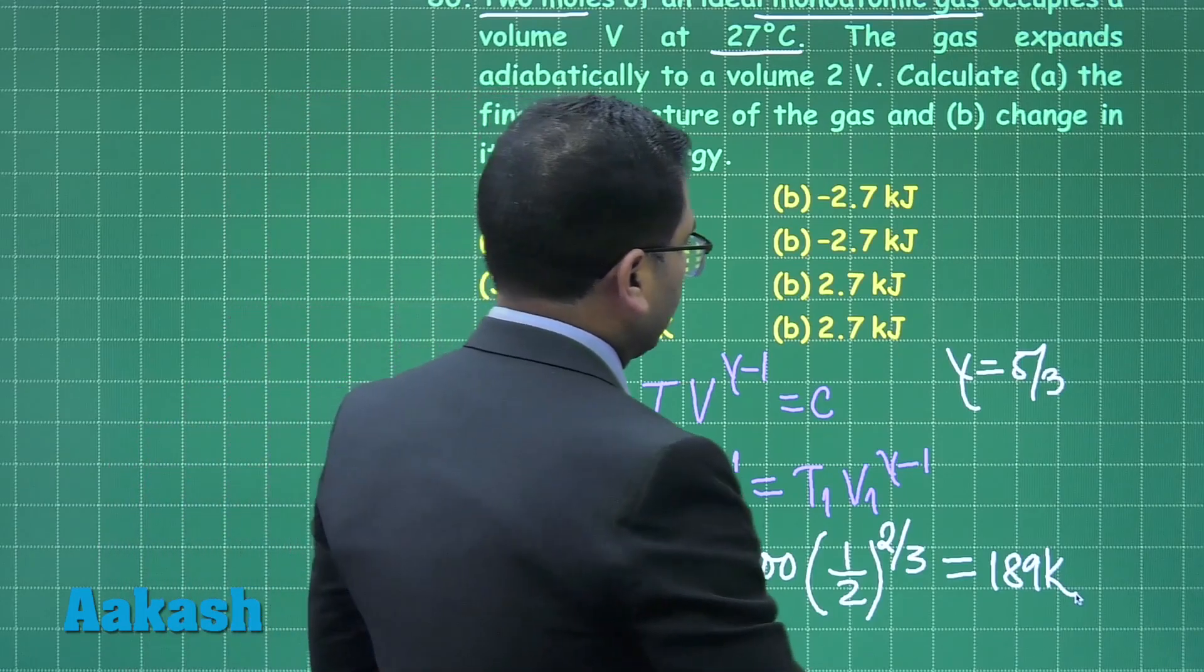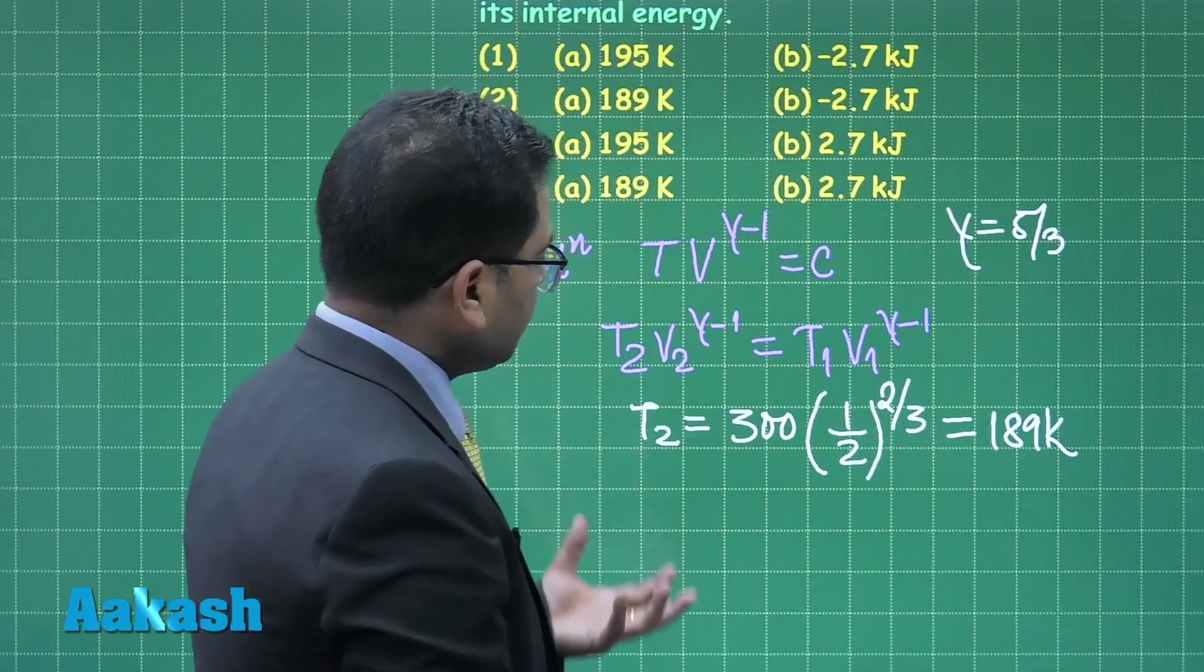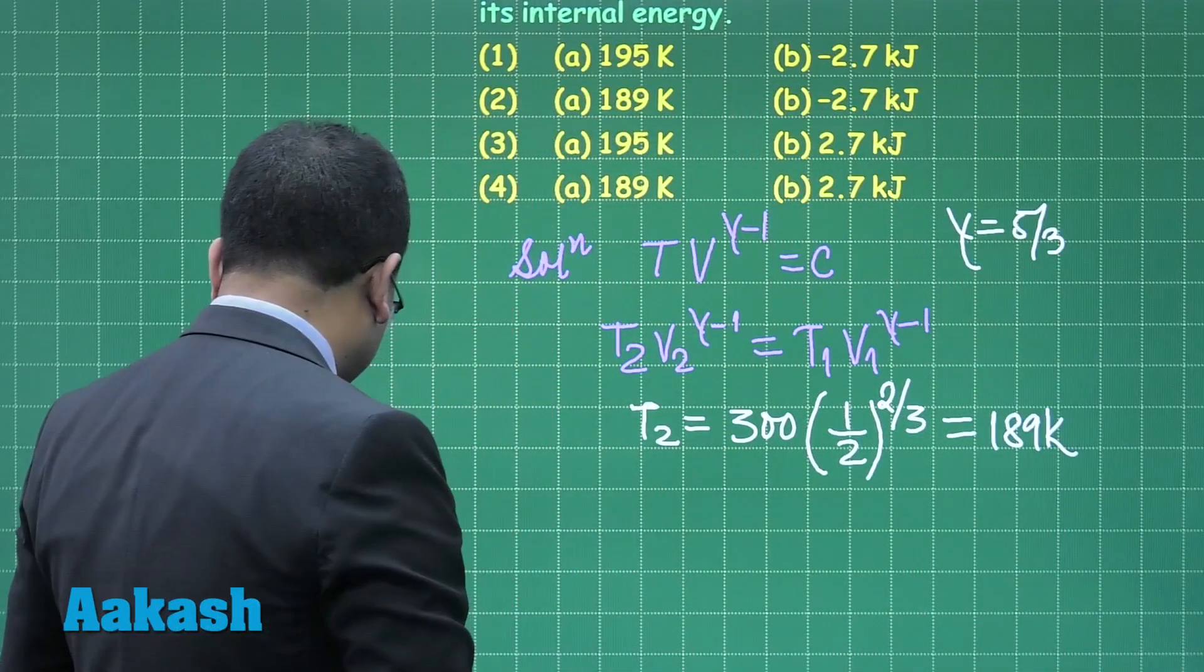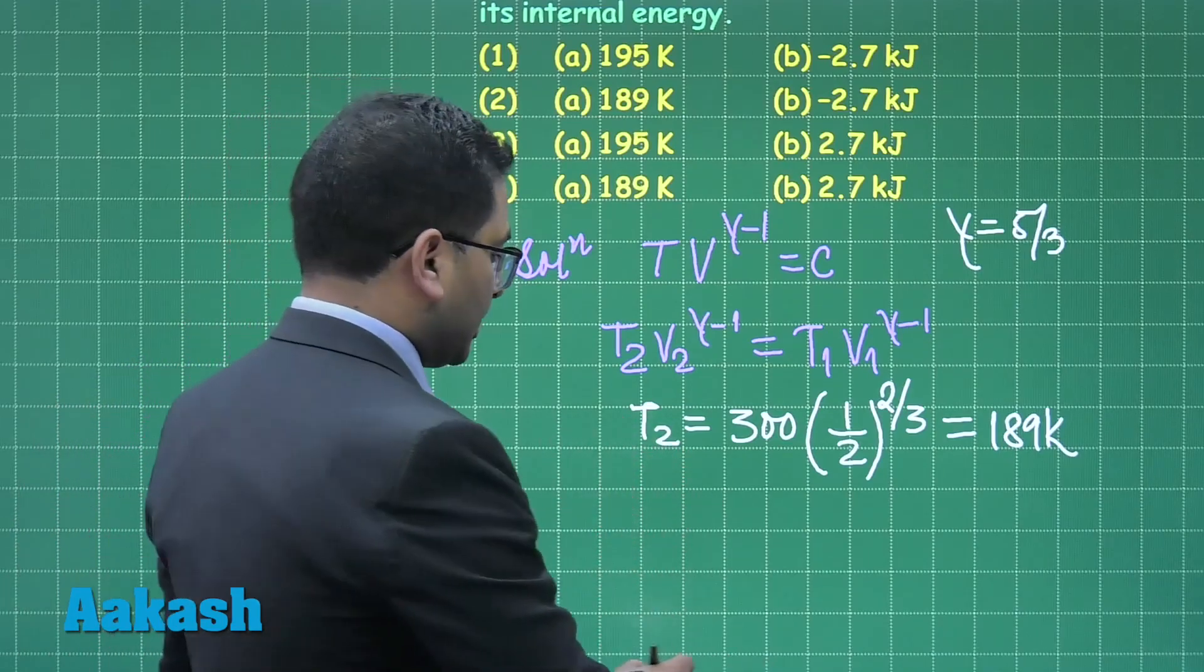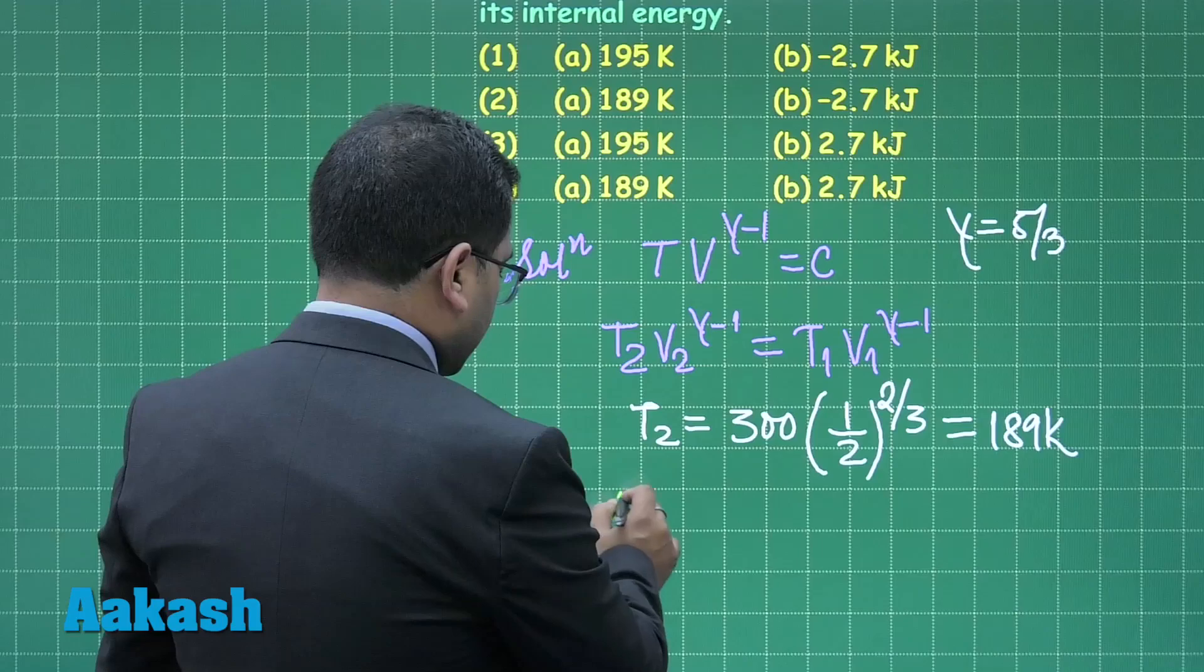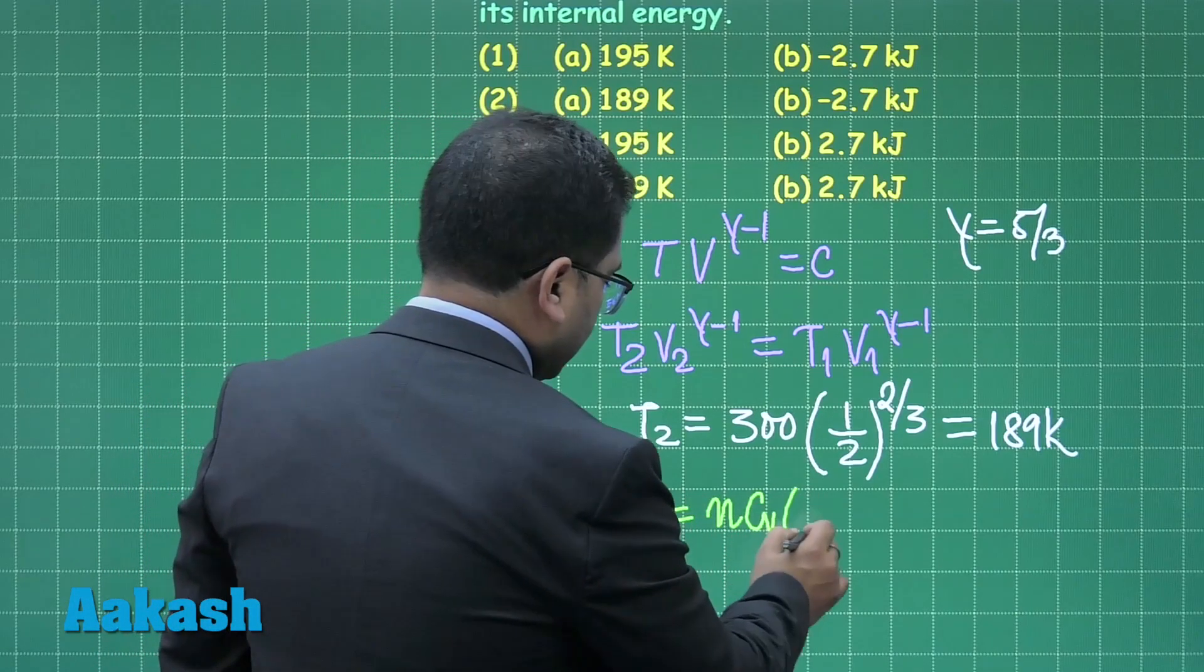The temperature has fallen, and this means the change in internal energy would be negative. That is straightforward. So what I will get is the change in internal energy is n C_v times T_2 minus T_1.